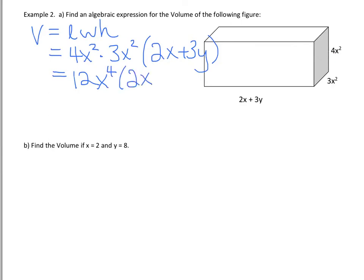So now we have a monomial times a binomial, and hopefully you can remember and see that we're going to take that monomial, and we're going to multiply it by both pieces in the brackets. That was called the distributive property.